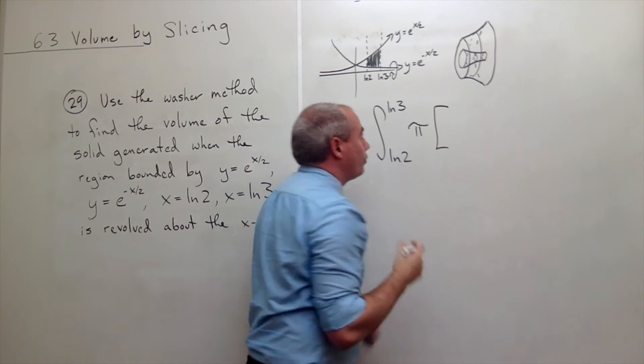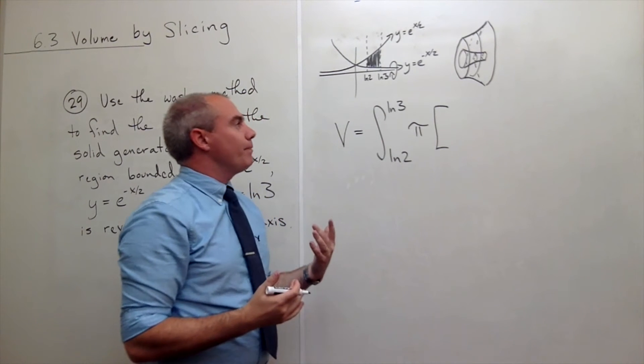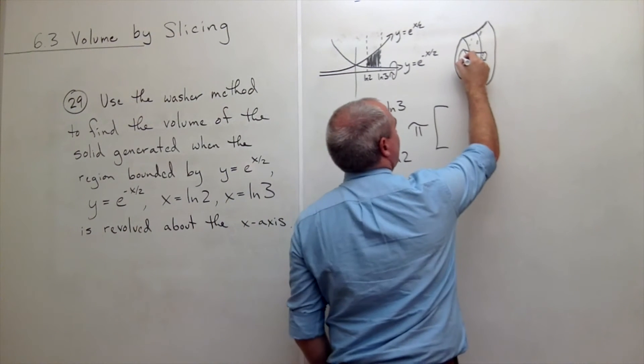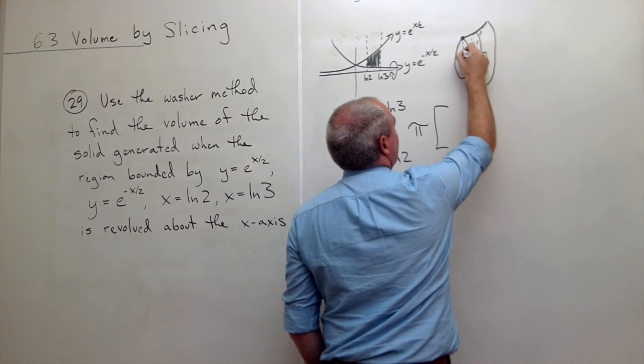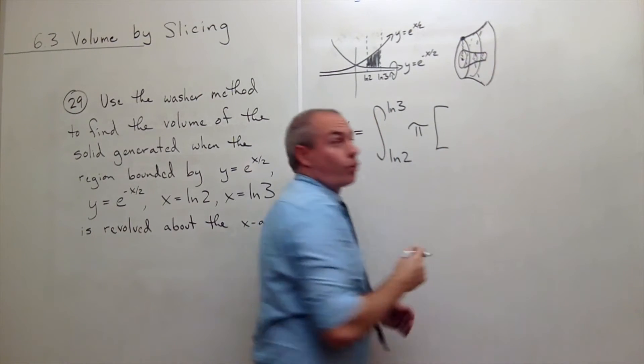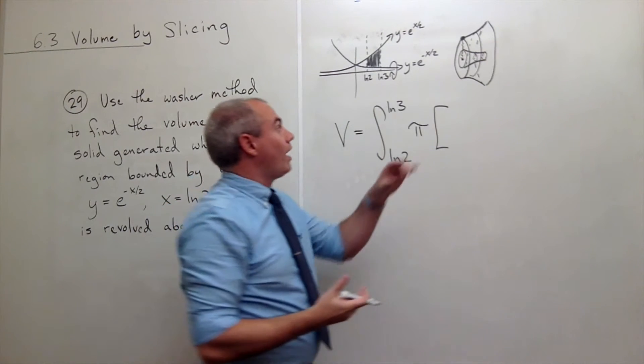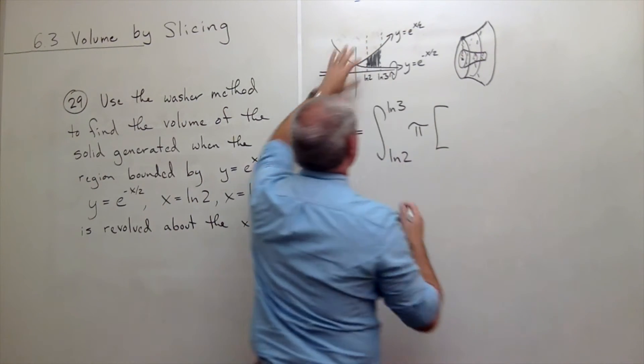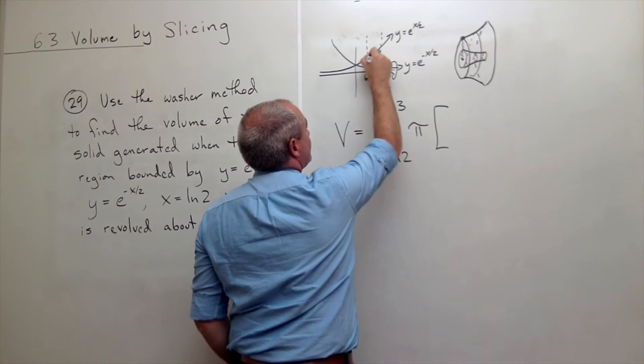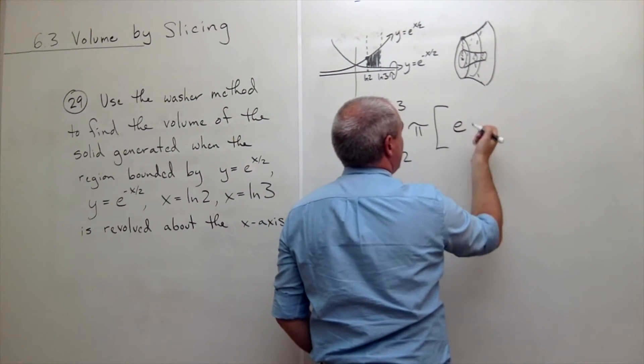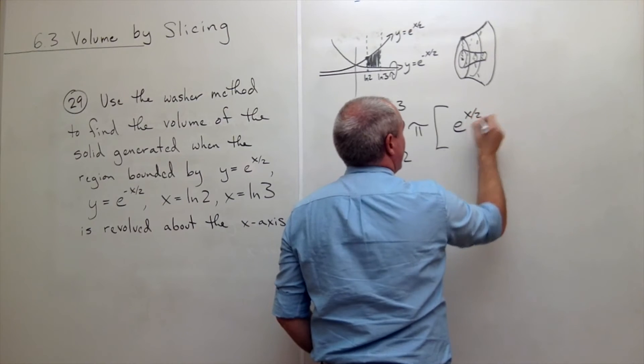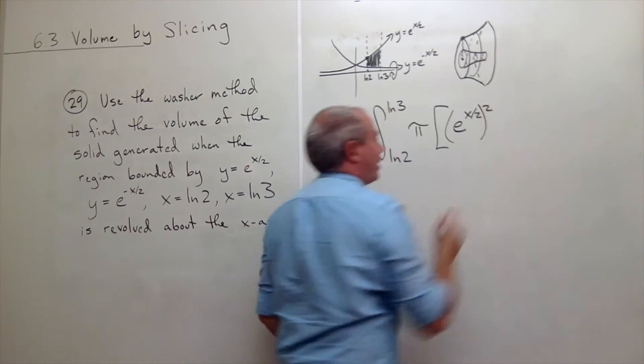And what do I mean by the outer radius? Well, if I'm sitting here on this washer, I have to go up here to get the big radius or the outer radius. Well, what function is that? Come back over here. That's this function. Y equals e to the x over 2. So this is e to the x over 2. And I need to make sure to square it.